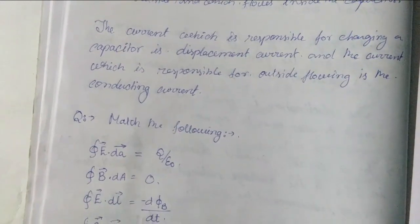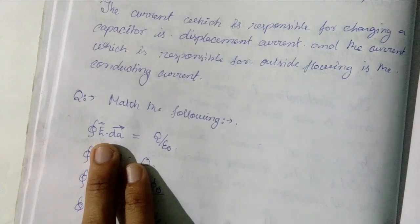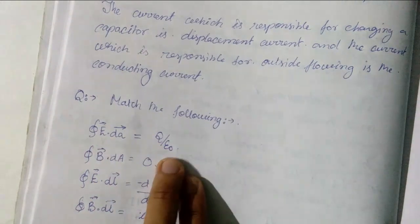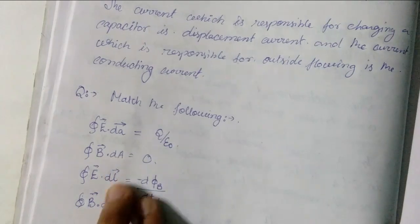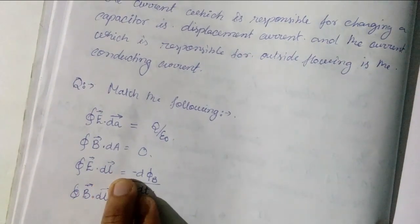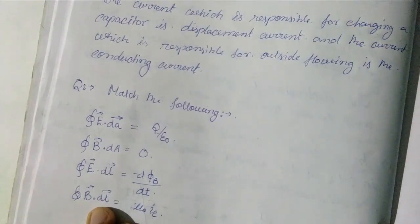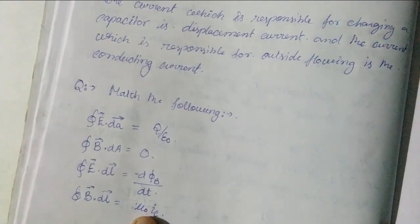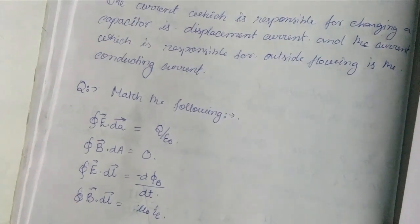Now we are given the following: Integration of E dot dA is equal to q by epsilon naught. Integration of B dot dA is equal to 0. Integration of E dot dL is equal to minus d phi by dt. Integration of B dot dL is equal to mu naught IC, where IC is the conducting current.